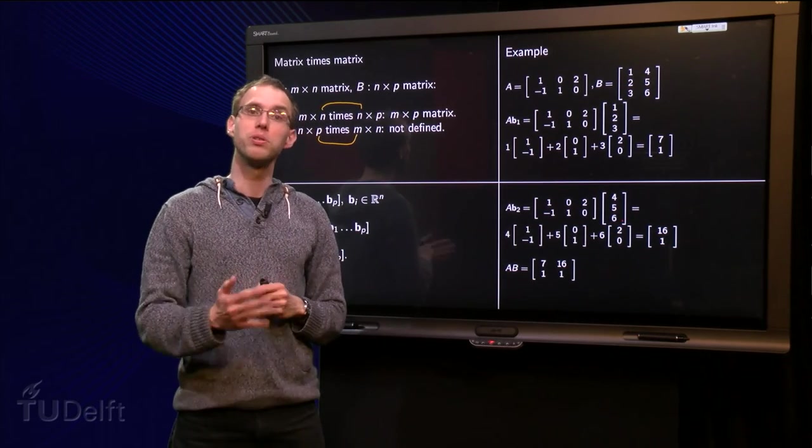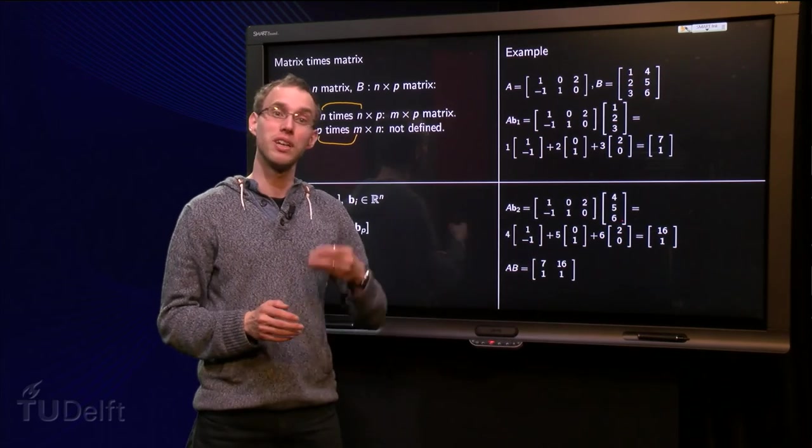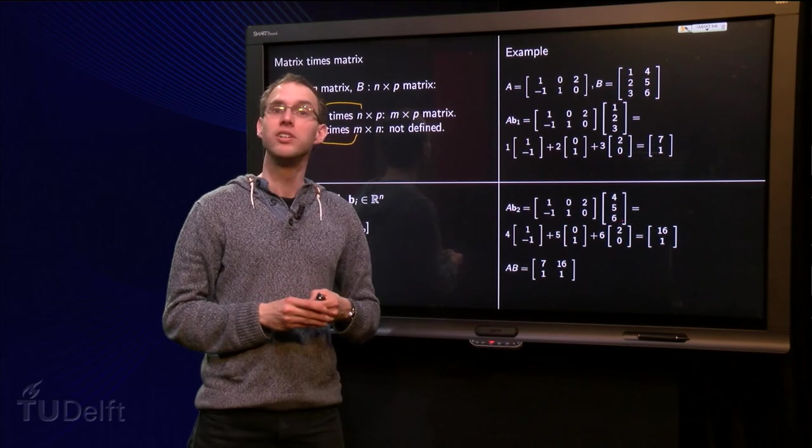So as you see, computing matrix times matrix is just as difficult as computing matrix times vector a few times. So that's all.